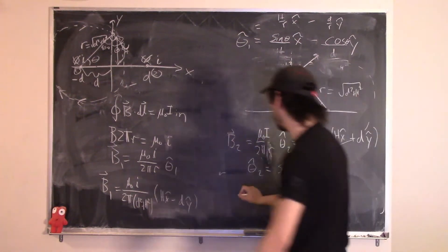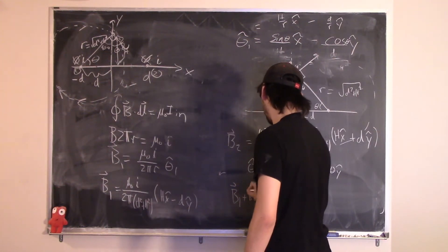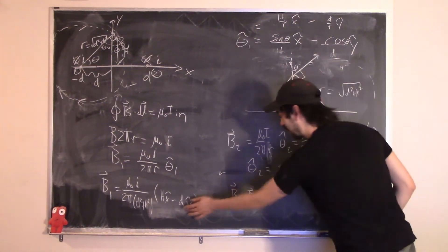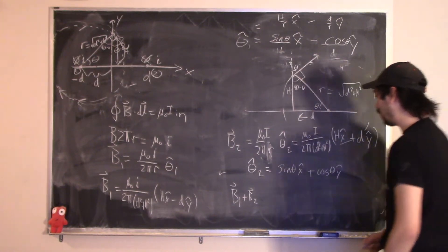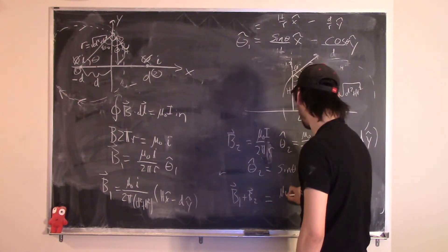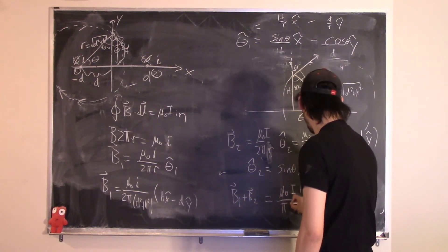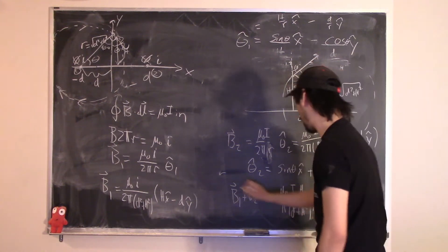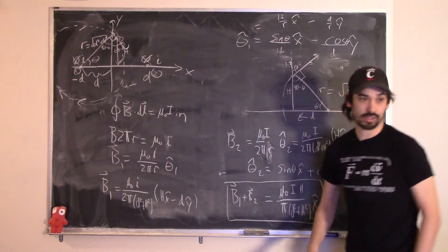When we add B1 plus B2, the y components cancel because one is negative and one is positive, and the x components add. The result is B_total equals mu-naught i h divided by π(D² + h²) times x-hat.